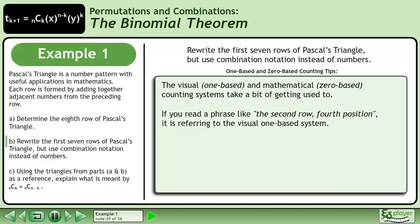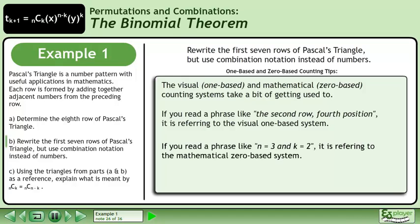If you read a phrase like 'the second row fourth position,' it is referring to the visual one-based system. If you read a phrase like 'n equals 3 and k equals 2,' it is referring to the mathematical zero-based system.